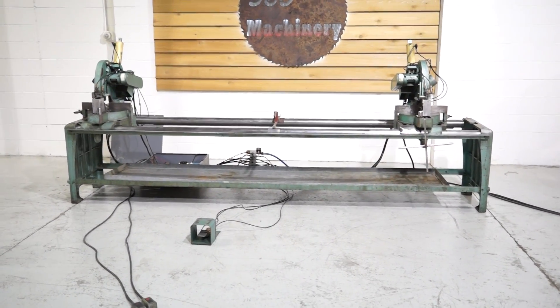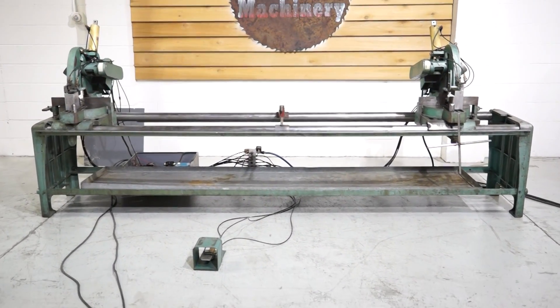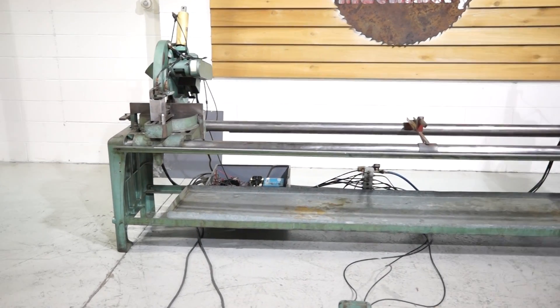Welcome to 360 Degree Machinery. We're going to do a walkthrough of a Pistorius dual miter saw. 12 inch blade capacity, up to 10 feet between centers.